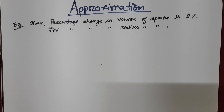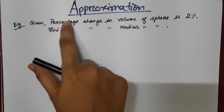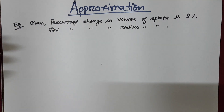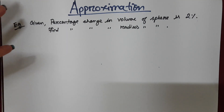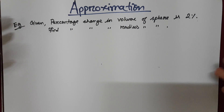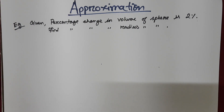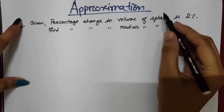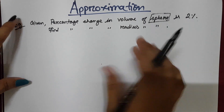Now here is an example. The given information is that the percentage change in the volume of a sphere is 2 percent. If volume is increased by 2 percent, it doesn't mean that radius will also increase by 2 percent, because volume and radius are not directly proportional. They give the percentage change for one variable and we need to find the percentage change for another variable.